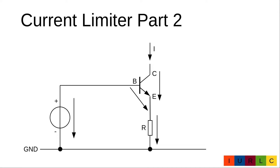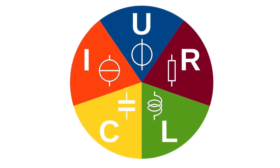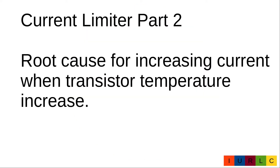In our current limiter part 1, we saw that with a high collector-emitter voltage the current slightly increases. Today we want to investigate the root cause of this current change. The power calculated by collector-emitter voltage multiplied with the current through the transistor is converted into heat, which warms up the transistor. When the transistor gets warmer, several parameters change, and we will now look in detail at which parameter is responsible for the current increase.